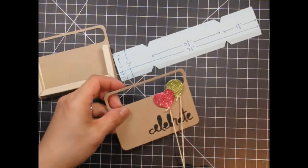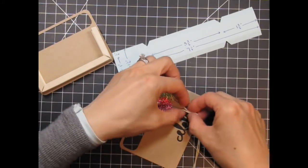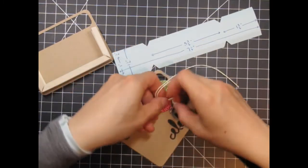Now I'm going to knot the two balloon strings together. Trim off the excess twine and add a dab of glossy accents to the underside of the knot to secure it to the box.